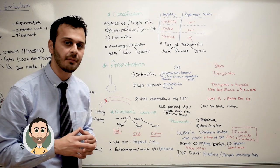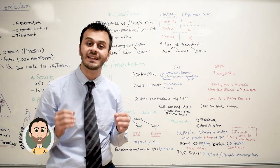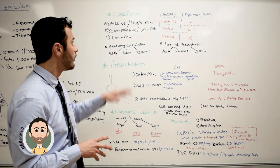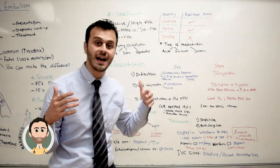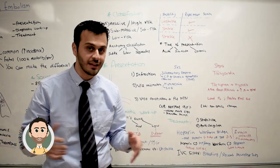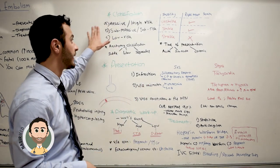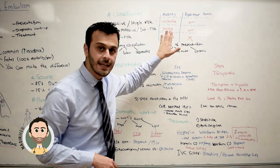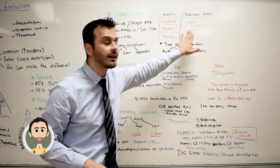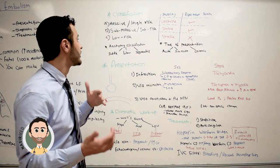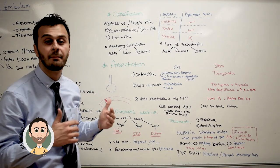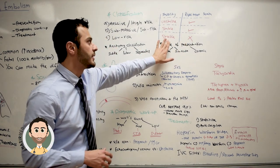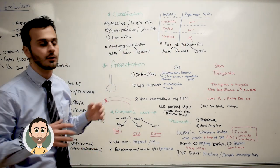Massive pulmonary embolism is very fatal — patients can die within the first two hours of presentation. It also has a different diagnostic and treatment approach compared to the other types. If the patient is hemodynamically stable but there is right heart strain, we classify it as intermediate risk or submassive pulmonary embolism.